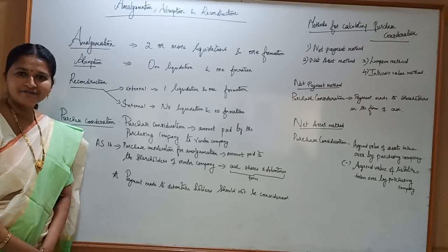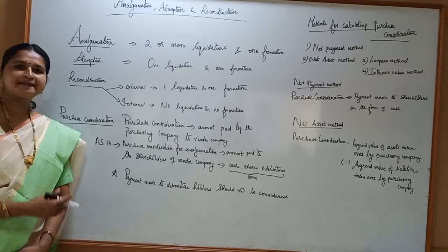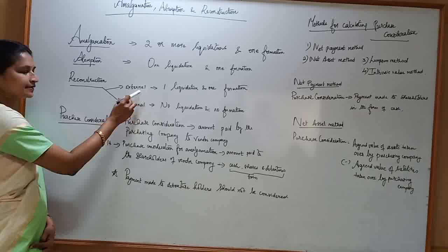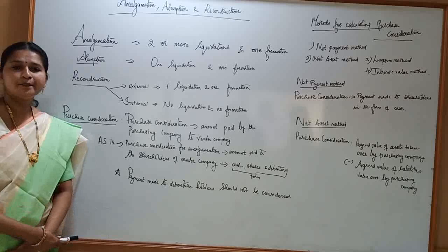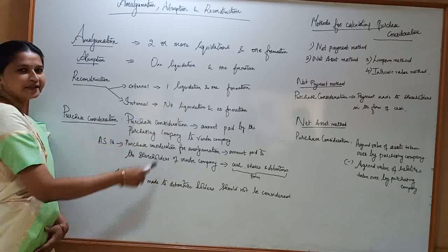In case of reconstruction, a financially weaker company is strengthened by taking certain measures to avoid closure. There are two forms of reconstruction: external reconstruction and internal reconstruction. In case of external reconstruction, a financially weaker company goes into liquidation, a new company is formed, and the business is carried on under a new name. So there is one liquidation and one formation.